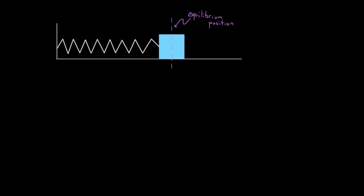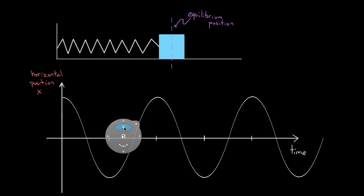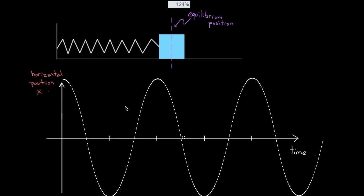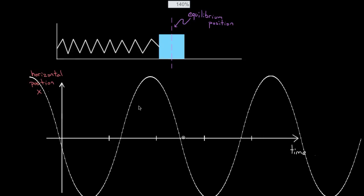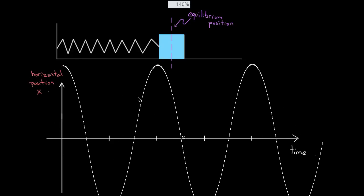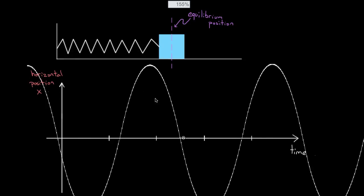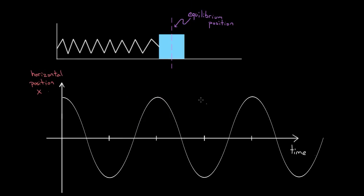If you were to look at this on a graph, increasing the amplitude would stretch the graph vertically — you'd have a bigger amplitude — but it would not stretch the graph horizontally. If you leave everything else the same and only change the amplitude, the period remains the same. Changes in amplitude do not affect the period.